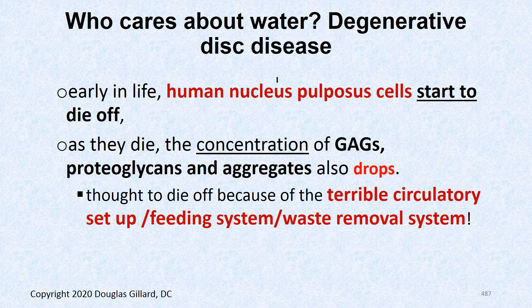Remember we talked about proteoglycans and glycosaminoglycans, and how the cells of the nucleus pulposus secrete proteoglycans as their main export product. Therefore the nucleus pulposus is about 80% water. If the cells of the disc die — and we know the disc has a very poor circulatory supply — the water content drops, making the disc more brittle and prone to injury.